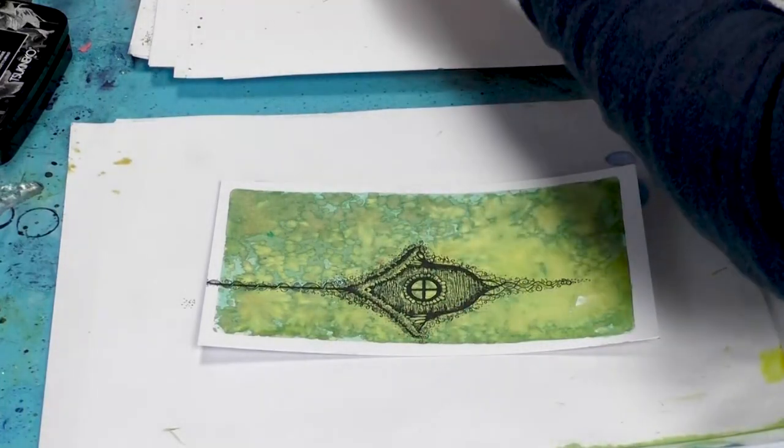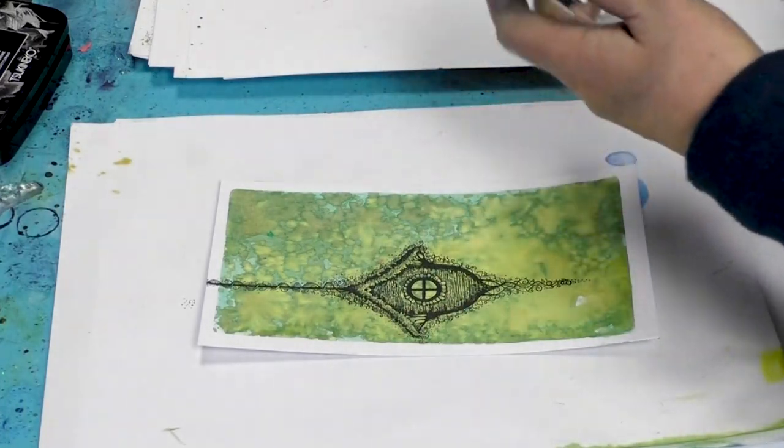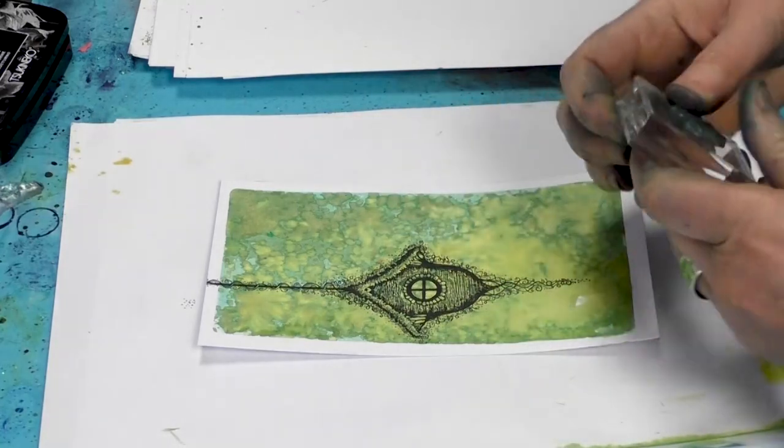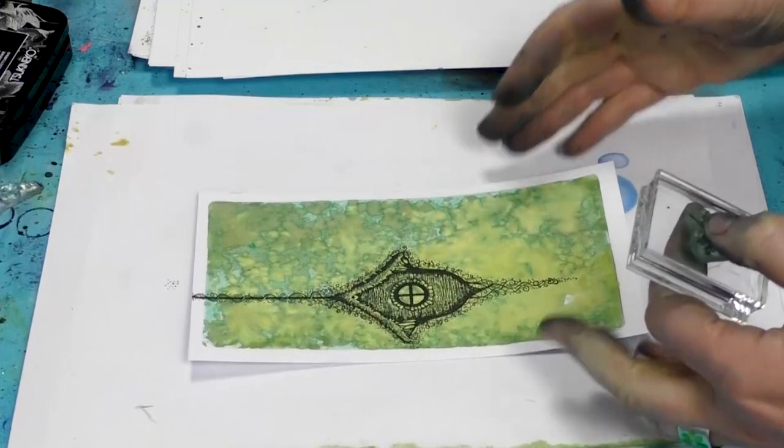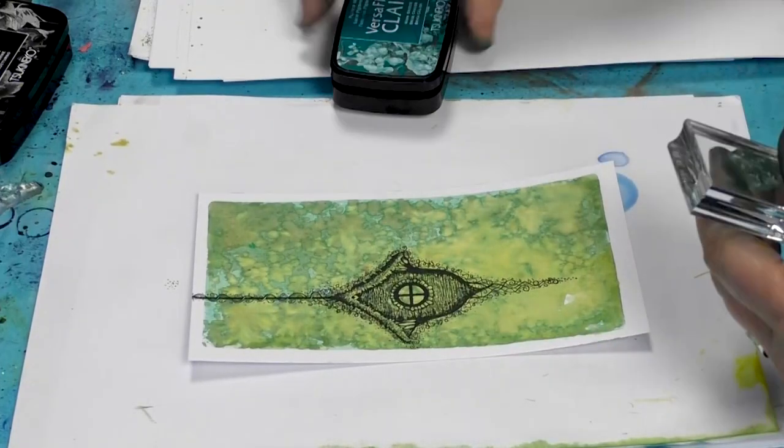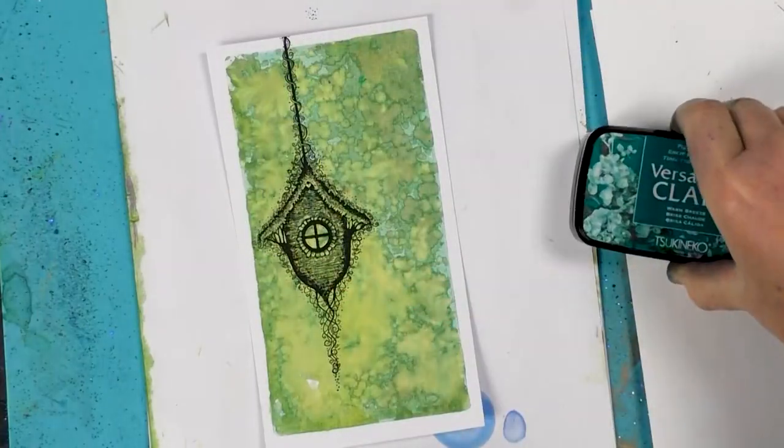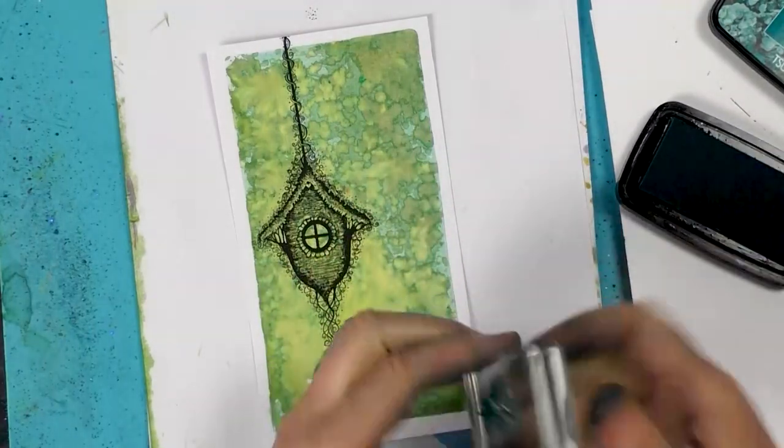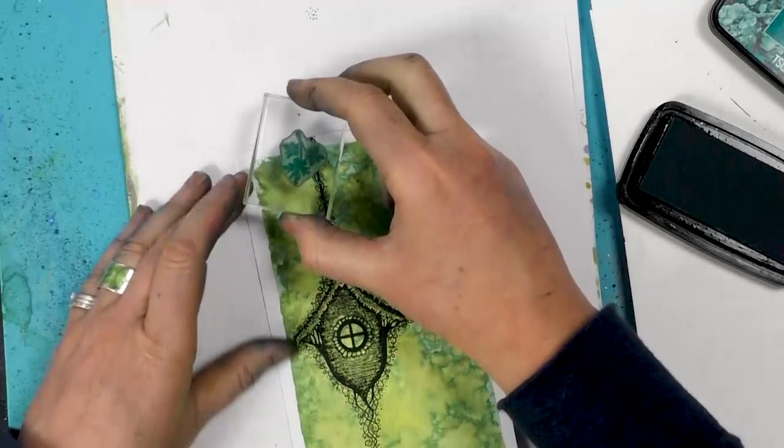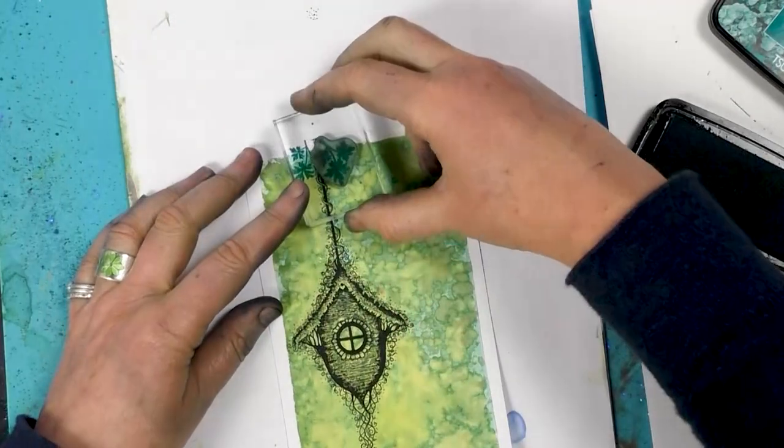I'm going to use some of our mini stamps just to build up a little bit of foliage at the top there. So I'm going to use the Warm Breeze and I'll start at the top.